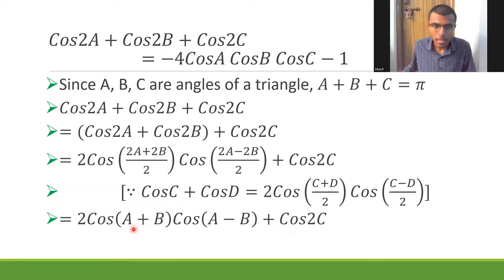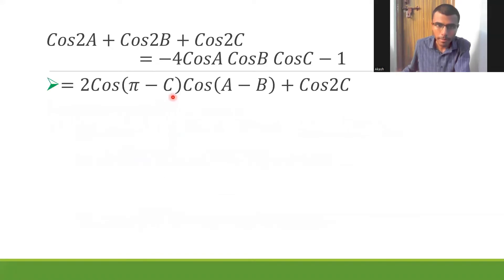Now in place of A+B, I'm going to write this A+B as π - C. Look at here at the top, come to the top. See, basically A + B + C is π, so A + B would be nothing but π - C. So that's what I'm going to use it here. So I'm going to write π - C in place of A + B. So 2cos(π - C)cos(A - B) + cos2C. All good.